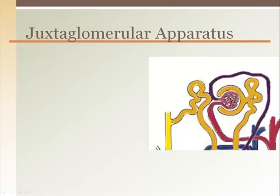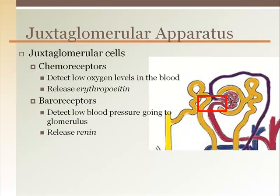The juxtaglomerular apparatus contains chemoreceptors and baroreceptors in the wall of the afferent arteriole. The chemoreceptors detect oxygen levels. When the blood oxygen levels decline, the hormone erythropoietin is released.